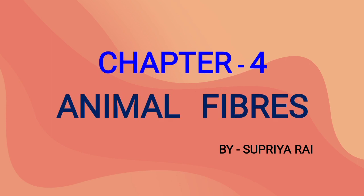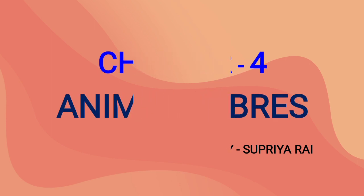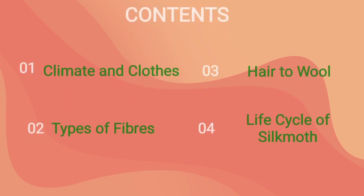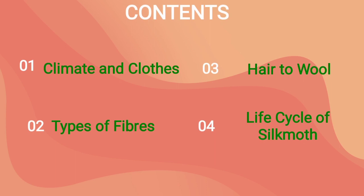Hello everyone, myself Supriya Rai. In this video we will see chapter number four of class seventh, Animal Fibers. In this video we will cover the following topics: climate and clothes, types of fiber, hair to wool, and life cycle of silk moth.